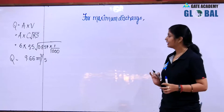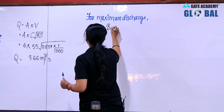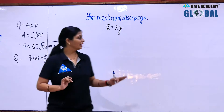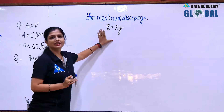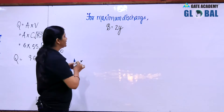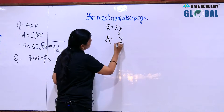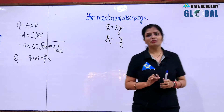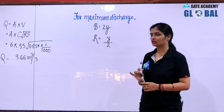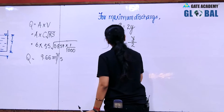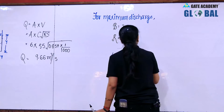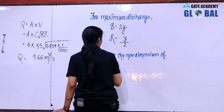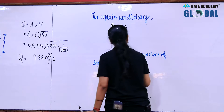There were two conditions for maximum discharge in a rectangular channel section. First, width should be twice the depth of flow. Let the new width be B dash and new depth be Y dash. Second, hydraulic radius is half the depth of flow. These two are the important conditions. The cross-sectional area is constant.